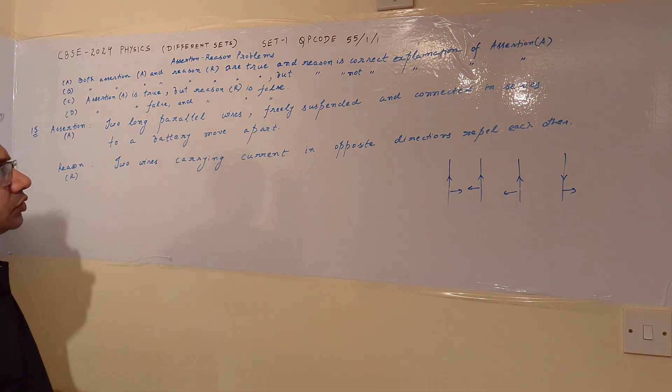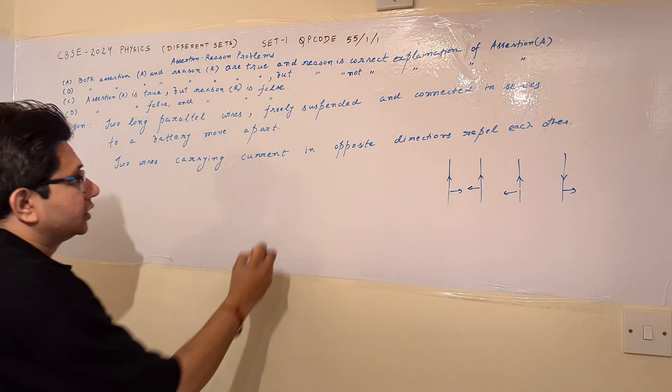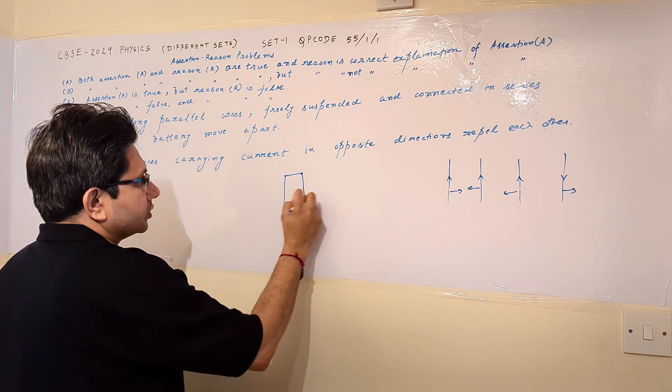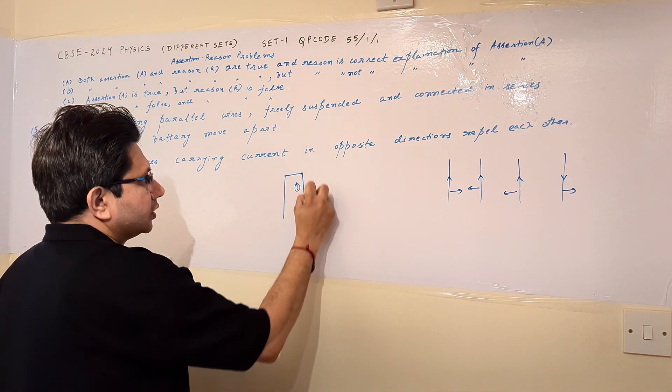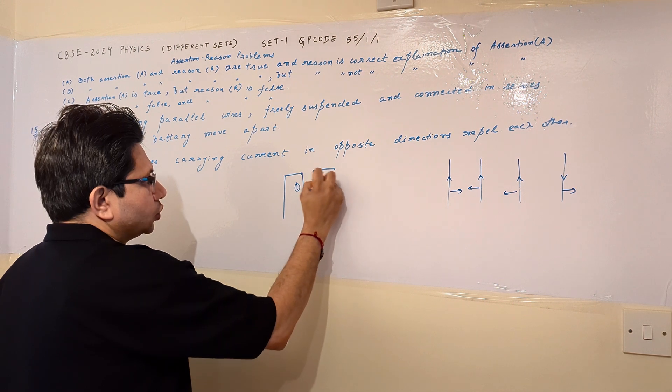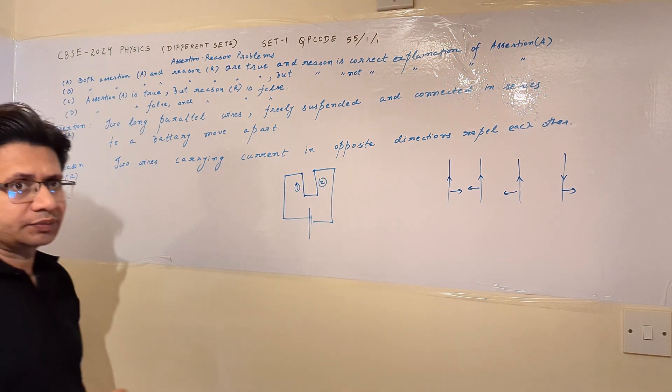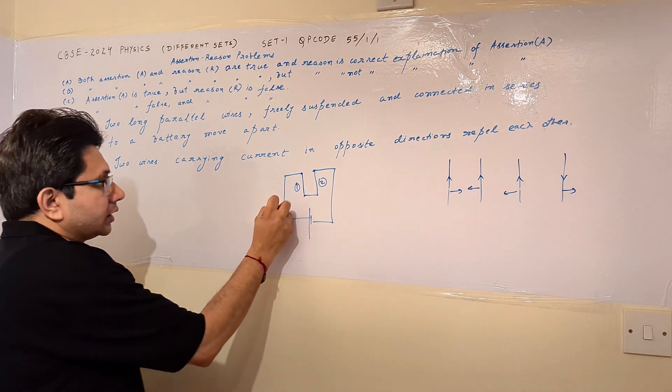Now when these two parallel wires are freely suspended and they are connected in series, then such an arrangement looks like this. Suppose this is wire one and this is wire two, and these are connected in series with a battery.